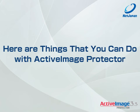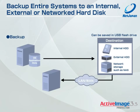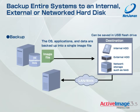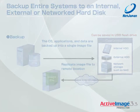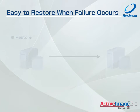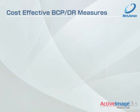Here are things that you can do with Active Image Protector. Backup entire systems to an internal, external, or networked hard disk. The operating system, applications, and data are all backed up into a single image file. Recover easily when failure occurs — just restore the image file from the destination back to the original machine. Cost effective business continuity protection and disaster recovery measures.